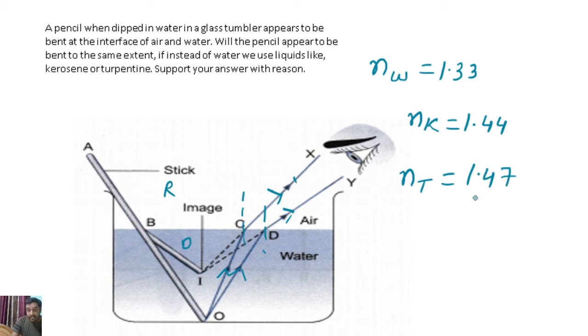Greater the refractive index, greater will be the bending. So the pencil will be bent the most in turpentine.